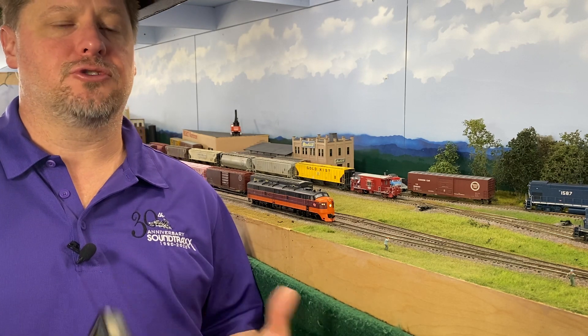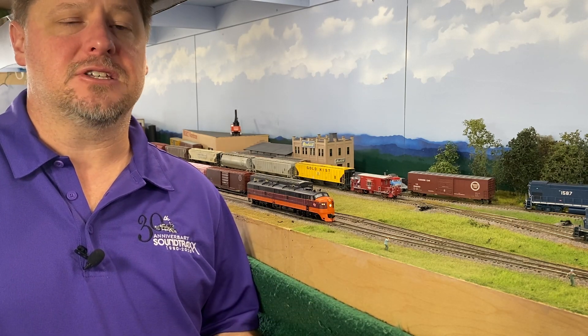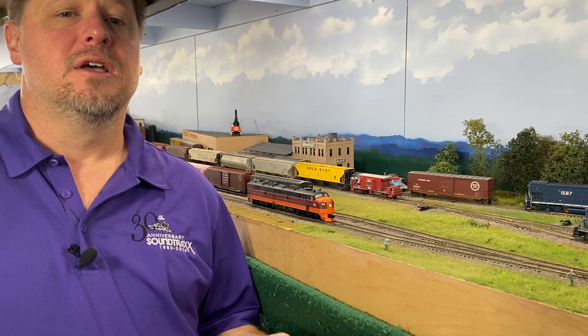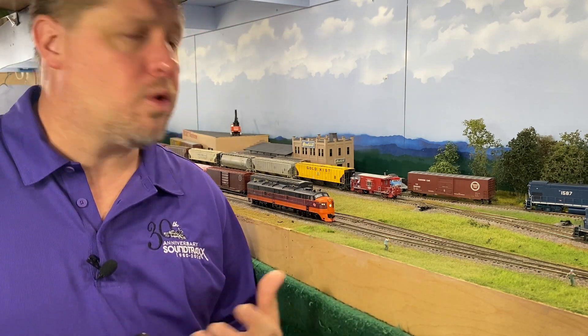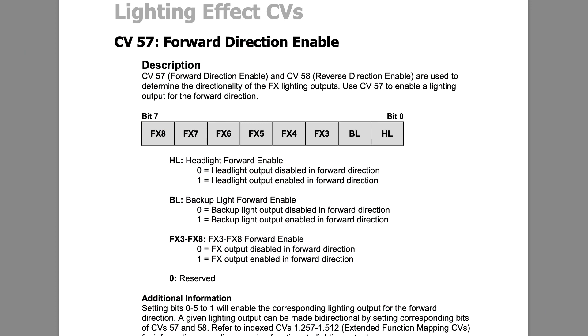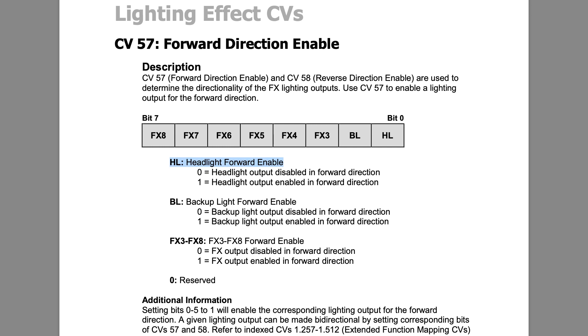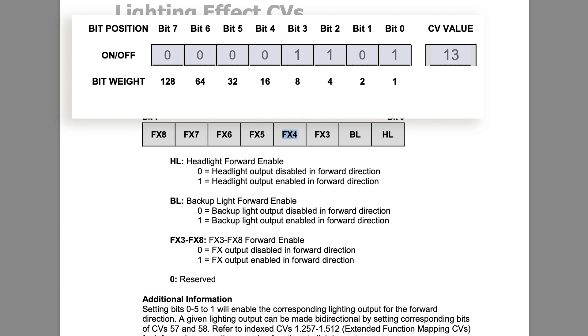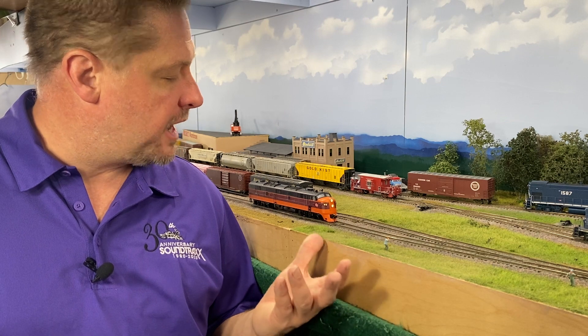The last part of this is CV 57 and 58, which help the decoder determine directionality. By default, F0 illuminates the headlight and the backup light. In CV 57 and 58, this is where the headlight is disabled in reverse and the backup light is disabled in forward. We can do this with our Mars light too. So if we want to extinguish that light when moving in reverse, we look at CV 57 to determine which lights we want on in forward. In this case we want FX1 — the headlight — FX3 — the number boards — and FX4 — the Mars light. So we're going to set CV 57 to a value of 13, so whenever moving in the forward direction those lights are illuminated properly.